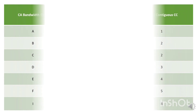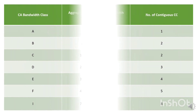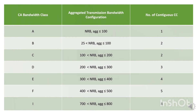In this table, we have summarized different carrier aggregation bandwidth classes. Here, NRB denotes the number of component carriers supported and their aggregated transmission bandwidth corresponding to the number of aggregated resource blocks.